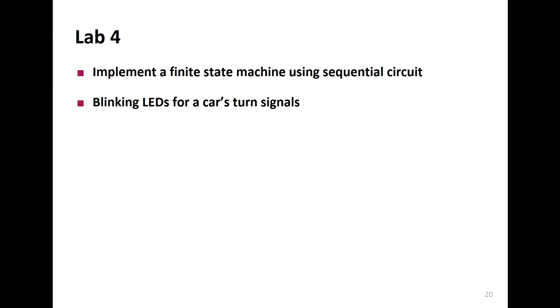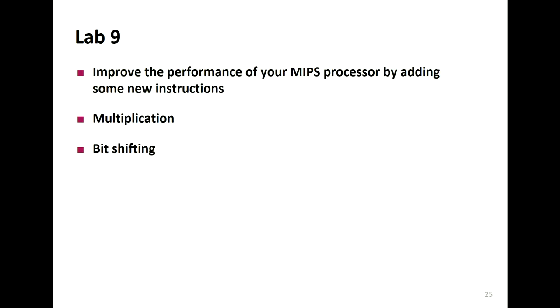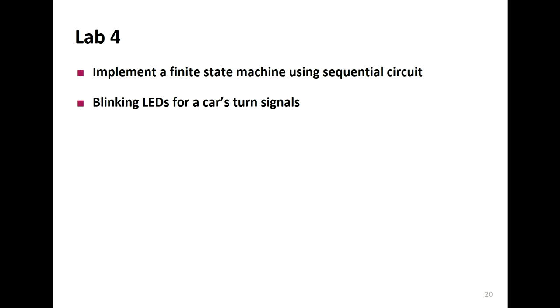In lab four, we'll implement a sequential circuit — your first lab on sequential logic. You'll implement blinking LEDs for a car's turn signals, specifically like a Ford Thunderbird where three lights blink one after the other when indicating a turn. This is where you'll learn to design a finite state machine, differentiate between two types of finite state machines, and map those designs to circuits.